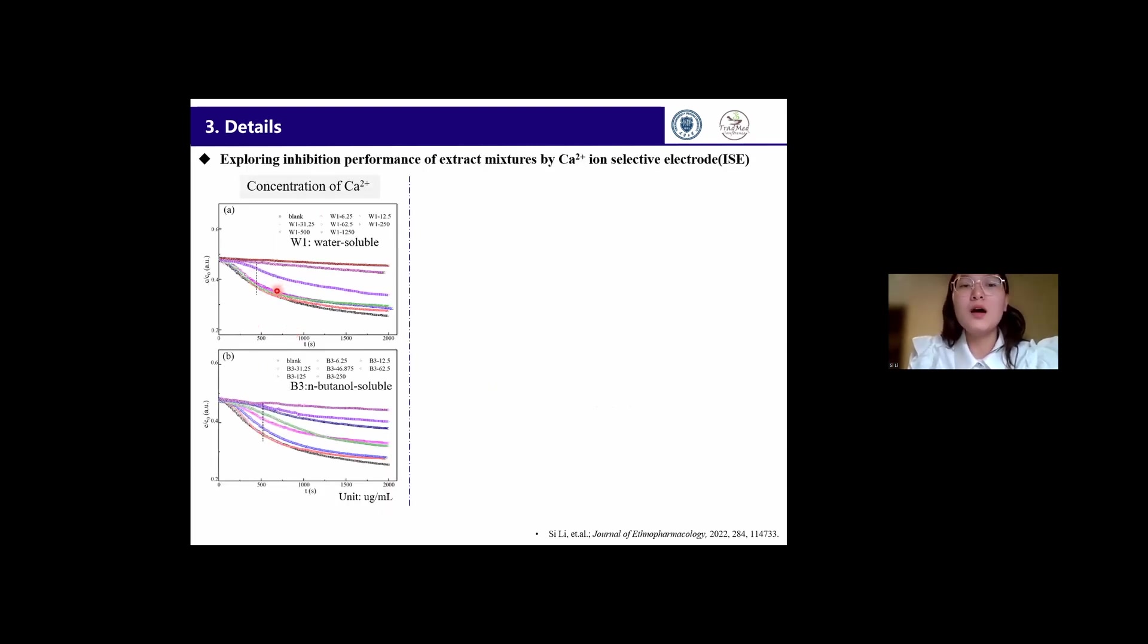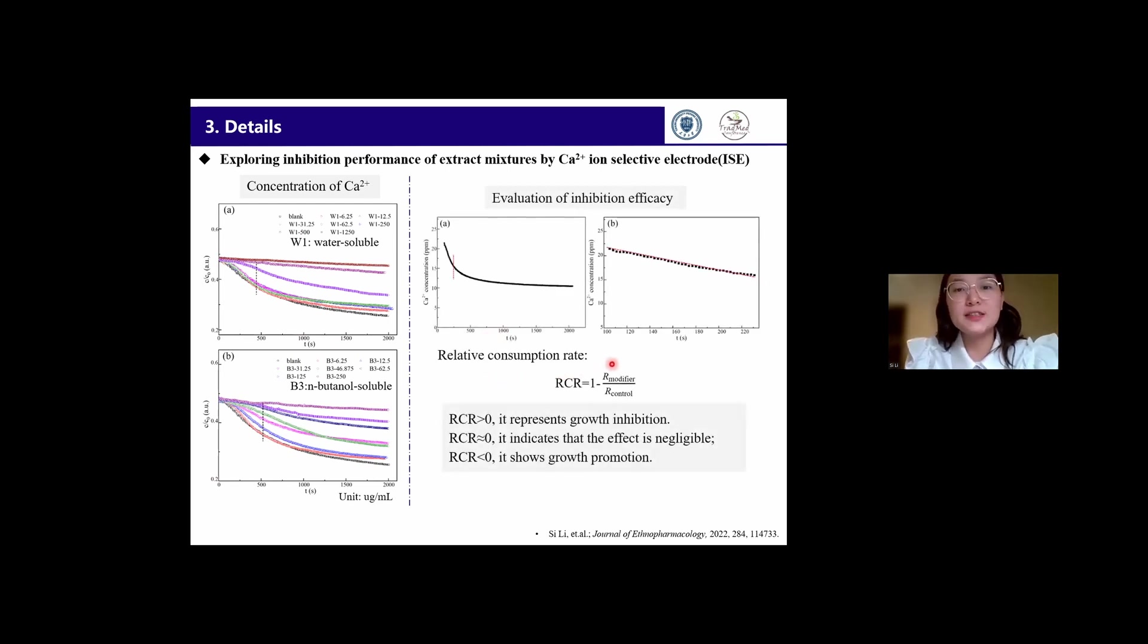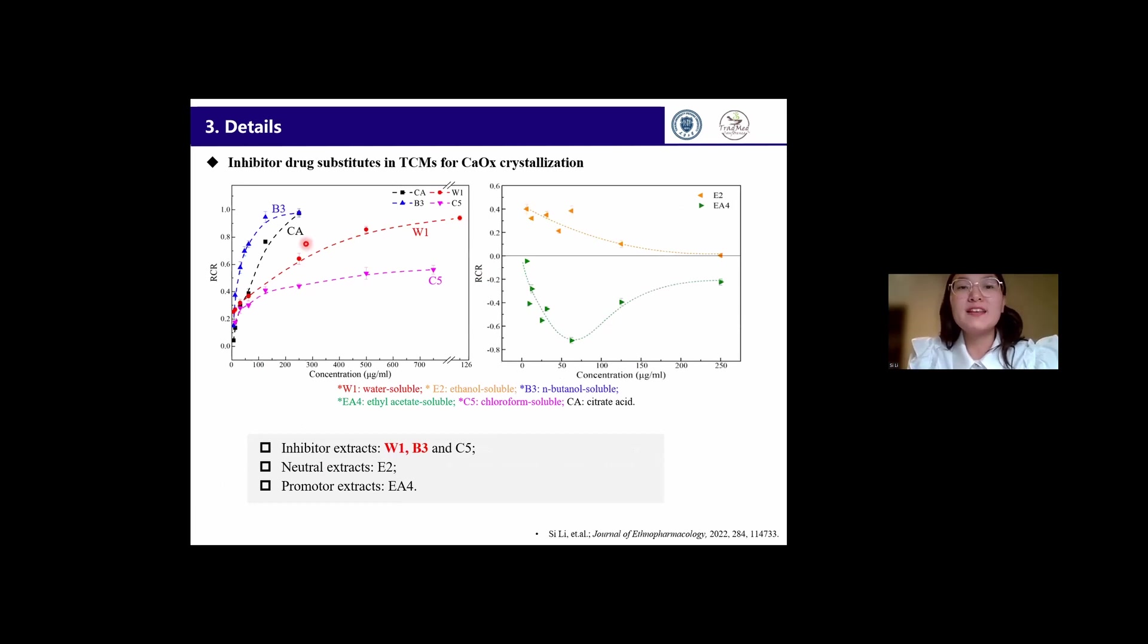There are some curves of the crystallization kinetics. From these curves, it's easy to find that the decrease of calcium ion concentration consumption indicates the inhibition on calcium oxalate crystallization. Therefore, we use the relative consumption rate to evaluate the inhibition performance of extracts and the active ingredients. After quantifying the extracts' inhibition percentage, we can find the butanol-soluble extracts show even better inhibition effects than citrate, where citrate is already used as an inhibitor drug for treating kidney stones.